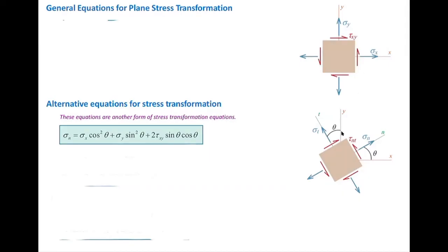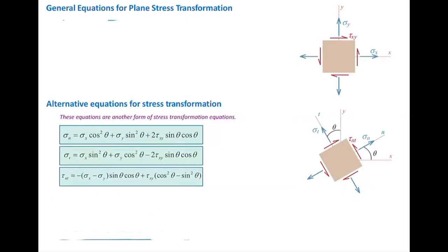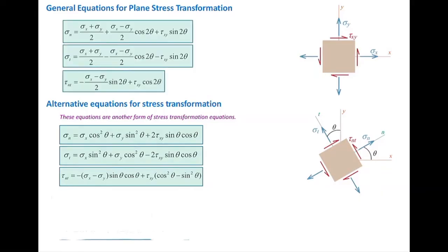Similarly, we can determine the normal stress sigma_t in the t-direction (the plane at angle theta + 90°), and shear stress tau_nt on the inclined plane. These three equations give the normal and shear stresses on the rotated stress element. They can also be rewritten in an alternative form — either form gives the same answer, though typically we work with the first set of equations and occasionally use the alternative form.